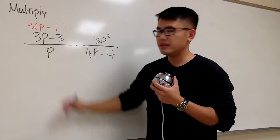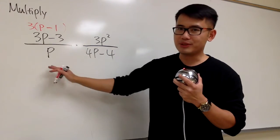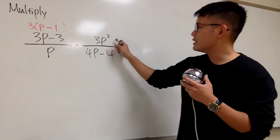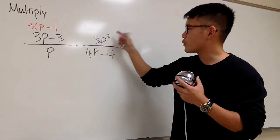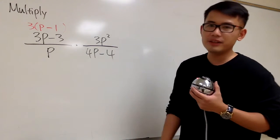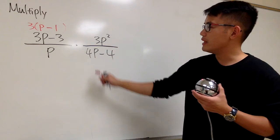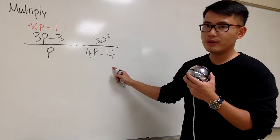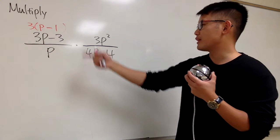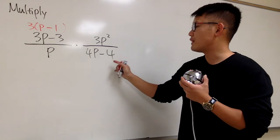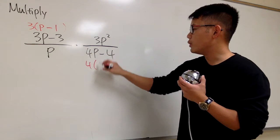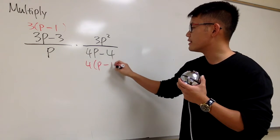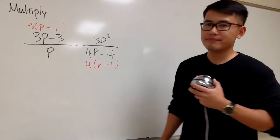And for this p, well, it's just a p, so we cannot do anything. This right here is 3p squared — cannot do anything. But then for the 4p minus 4, similar to that, right? I can factor out a 4, and then we can get p minus 1.